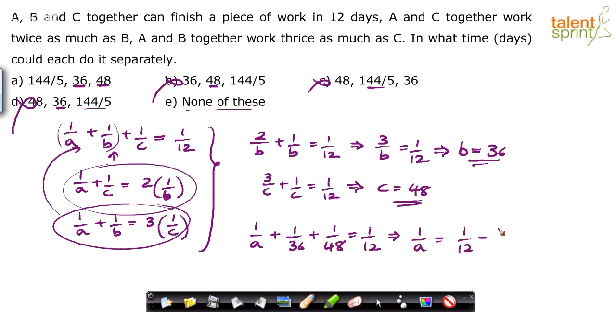So what will be 1/A? Directly you should write 1/12 - 1/36 - 1/48. Simplify this. LCM will be 144. So 1/A will be, LCM is 144, 12 goes 12 times, 36 goes 4 times, 48 goes 3 times.